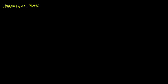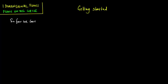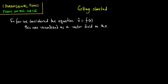We are still dealing with one-dimensional flows, except that now our focus is on the circle. We will now be dealing with flows on the circle rather than flows on the line. So far, we have considered the equation x-dot is equal to f of x, and this equation was visualized as a vector field on the line.